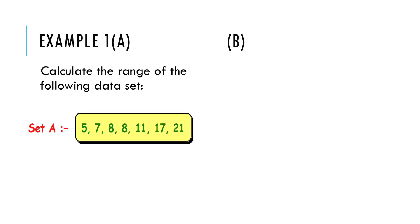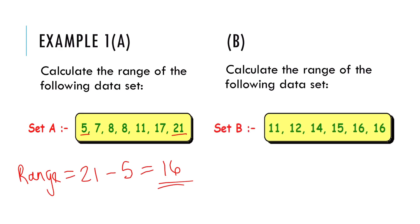So come back to our previous sets. We are now going to calculate the range. This one is already in order for us. So all we need to do here is take the highest number, which is 21 and subtract the lowest number, which is 5. So our range is 16. To calculate the range of set B, again, it's in order for us. So we just want to do the highest number, which is 16, take away the lowest number, which is 11, which gives me a range of 5.